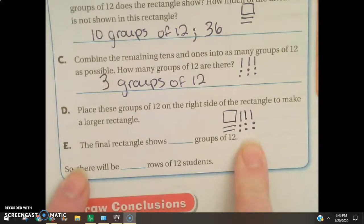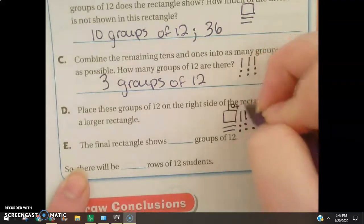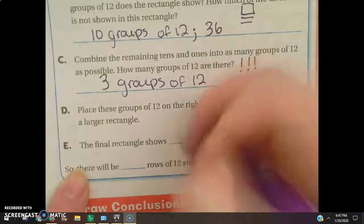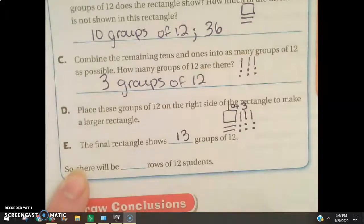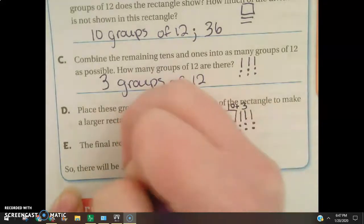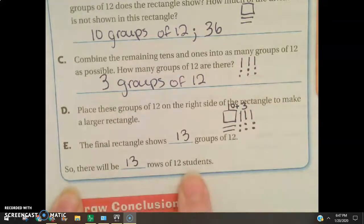And it has 10 plus 3, so 13 groups of 12, which means that there will be 13 rows of 12 students.